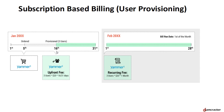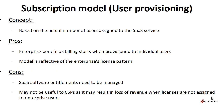Next month onwards, the platform charges the recurring amount based on the actual number of users who are active on the bill run date. To recap, this model offers billing based on the number of users assigned to the SaaS service, which is beneficial to cloud enterprises as the billing is based on actual licenses used. However, there are a few disadvantages for this model as indicated.